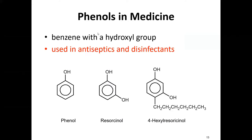Now we can have a phenol. A phenol is when we have a benzene ring attached to an OH group — it's an aromatic compound with its own unique name because it has its own unique functional group.